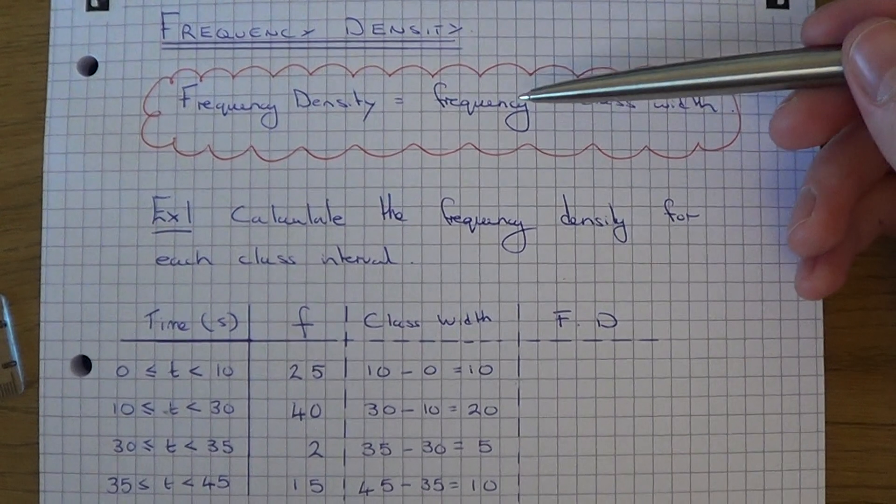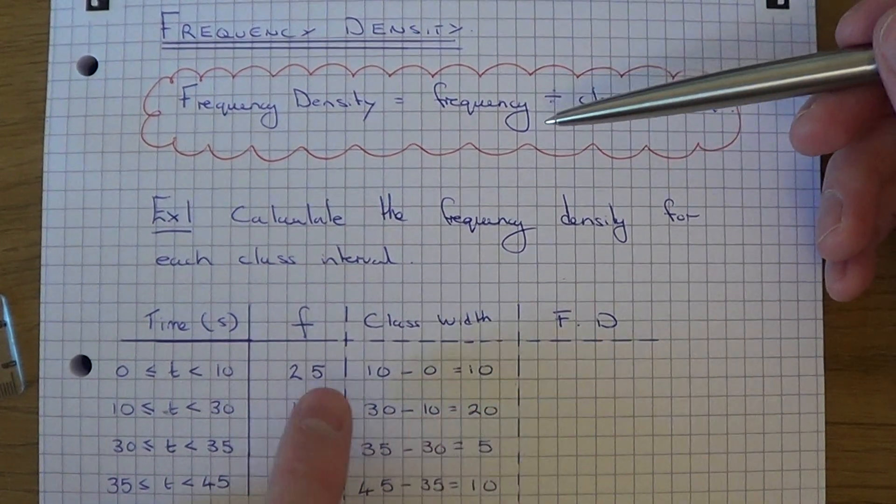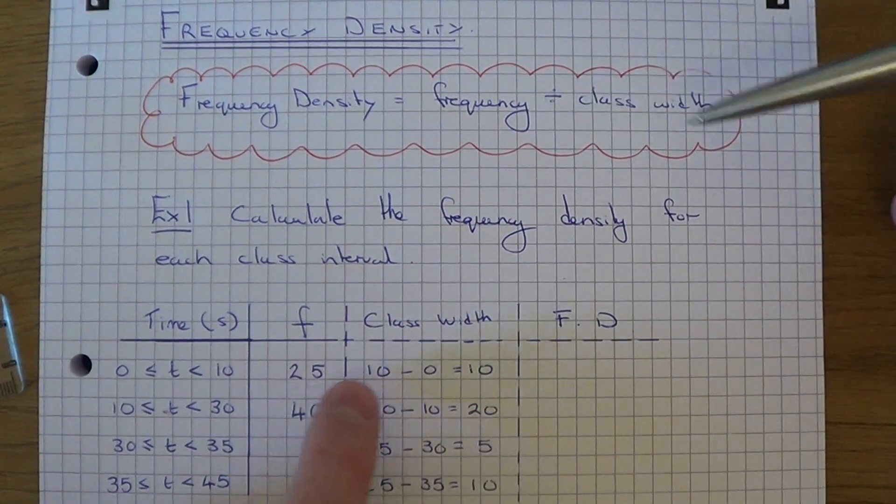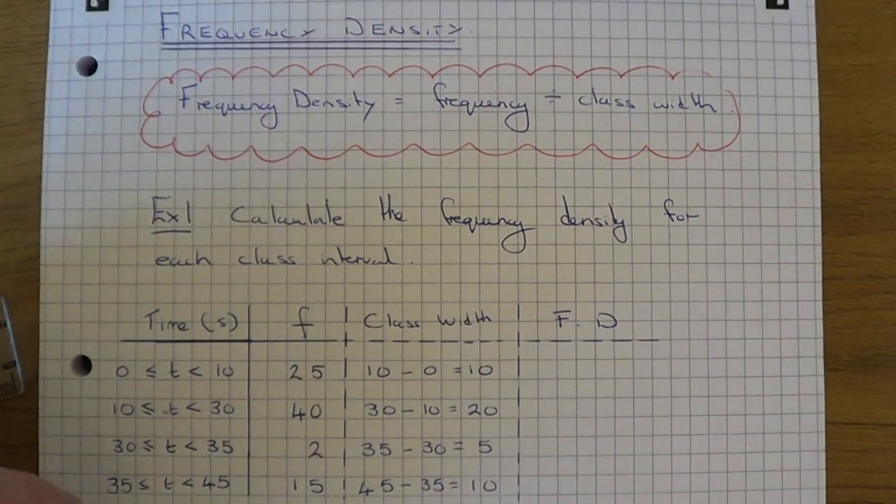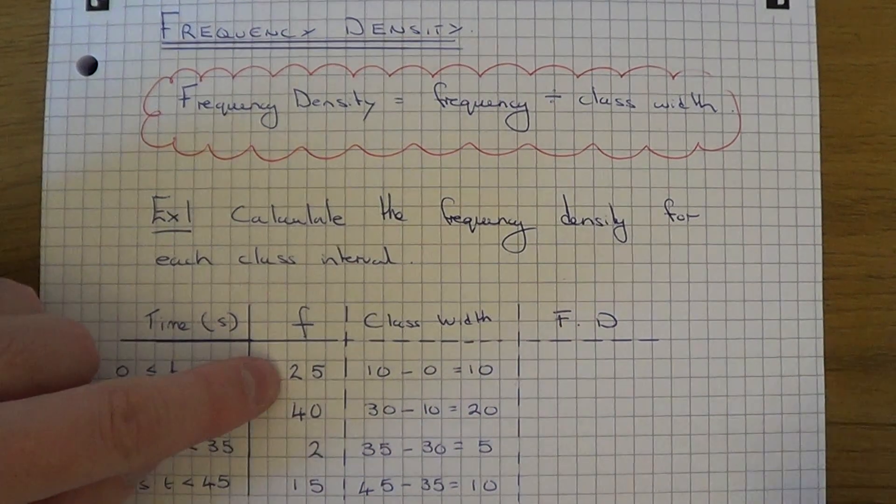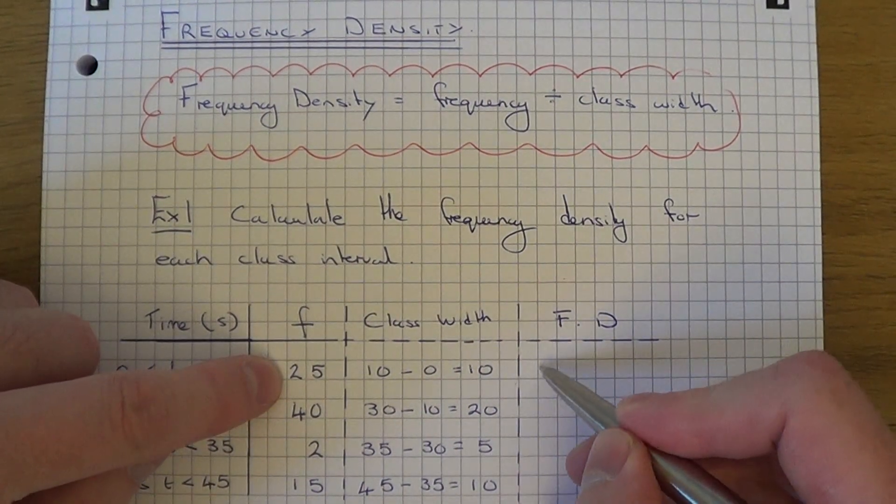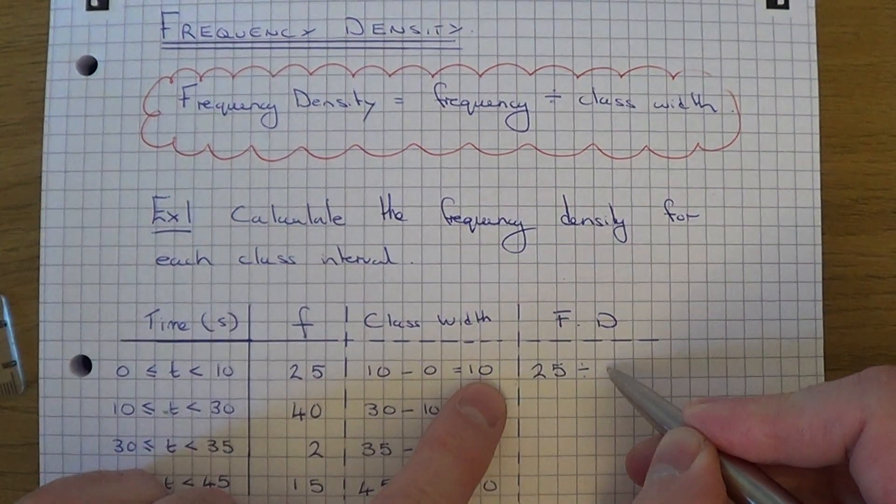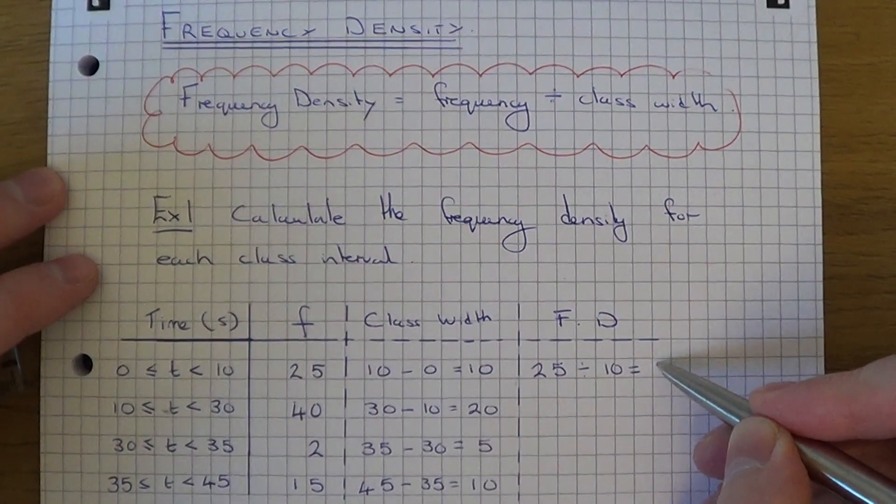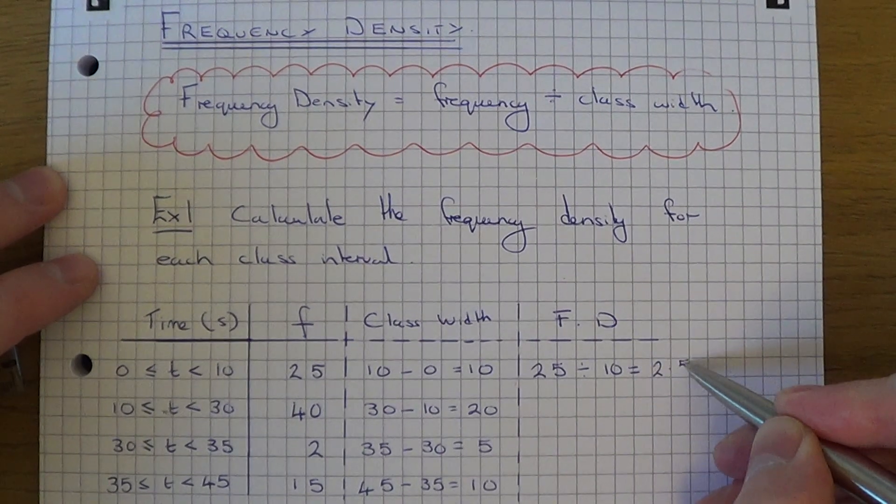We can use the formula above, so we just have to divide the frequency by the class width. Make sure you do it in that order, don't change the order around. For the first one, it's going to be 25 divided by the class width, so 25 divided by 10 would be 2.5.